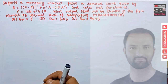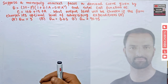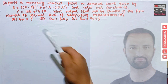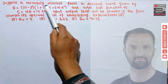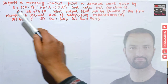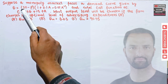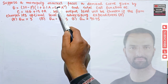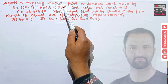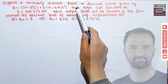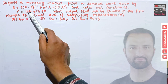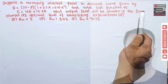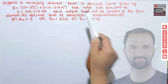Hi, this is Halal. In this video on the mathematical economics series, we will try to solve a problem asked by a friend Liana on the Telegram channel regarding monopoly. The question is: suppose a monopoly market faces a demand curve given by Q = 20 - P times (1 + 0.1a - 0.01a²), where a is advertisement, P is price, Q is quantity. The total cost function is C = 10Q + 15 + a.